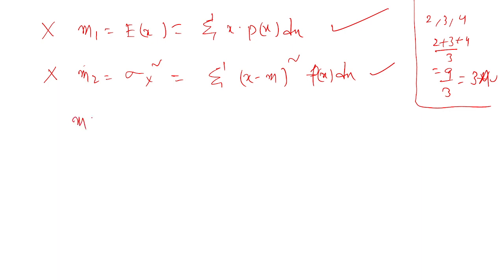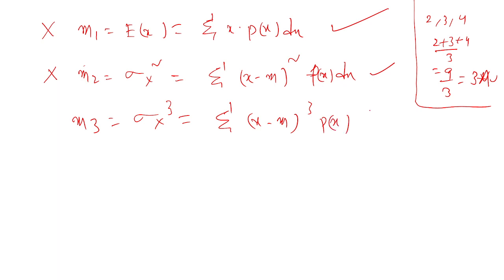If the second mean is also not sufficient and the company data is not analyzing properly, they go for m₃, which is skewness, denoted with sigma x cube. That is the sum of (x minus m) whole cube into p(x) dx. This is the third moment or third averaging process.